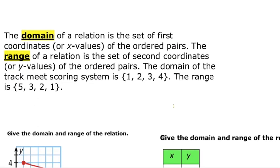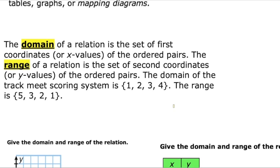The domain of any relation is going to be the set of the first coordinates. The first coordinate is always your x values, so the domain is always associated with your x values. The range of the relation is going to be the second coordinate, or your y values. Anytime we talk about range we're talking about y values; anytime we talk about domain we're talking about x values.